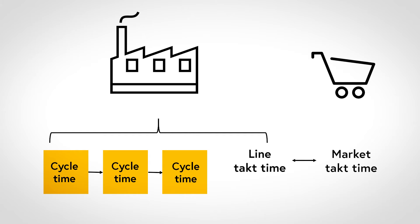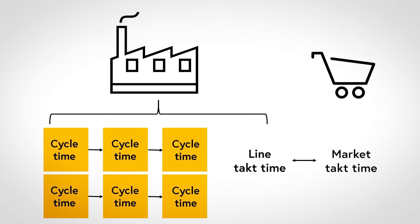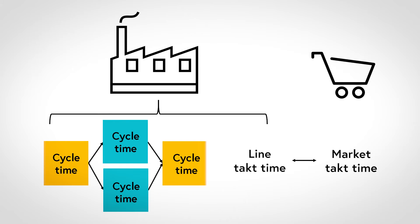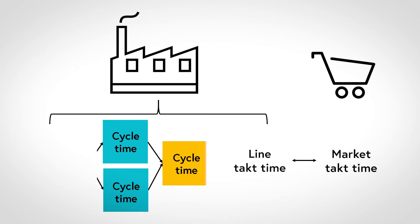In practice it is never like that. Cycle times are almost always designed to be a bit faster than the Takt time. These distinctions are important because, for example, if we add another line, the line Takt time doubles while market Takt time remains the same. And if we add a parallel process, the cycle time of that process can double without jeopardizing the line Takt time.